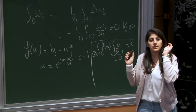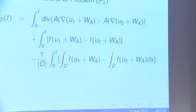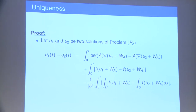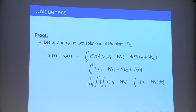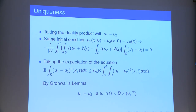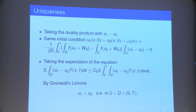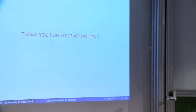To prove uniqueness, we take two solutions u1 and u2. Their difference u1 minus u2 satisfies an equation involving the nonlinear diffusion terms, reaction terms, and non-local terms of each solution. We take the duality product with u1 minus u2. Since u1 and u2 have the same initial condition phi_0, the non-local term contribution is zero. Taking the expectation and applying Gronwall's lemma, we prove that u1 equals u2 for almost every omega, x, and t in Omega cross D cross [0,T].